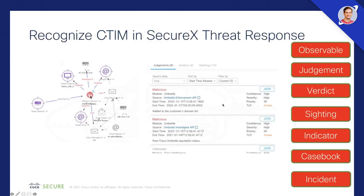You can also recognize CTIM in SecureX Threat Response — for example, you can see the judgment verdicts as sightings. Target sightings show up as a target, which means it's a sighting that has a host device in your organization — for example, an iPhone, MacBook, or server that has actually reached out to a domain or something similar. Targets and sightings are very important because if we have them, it means we probably need to do some more investigation.